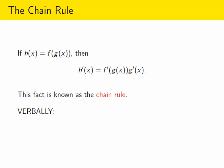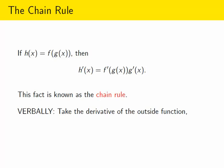So verbally, the way I would describe this rule is as follows. You take the derivative of the outside function. That's this f prime here. That was the derivative of f, which was our outside function. Take the derivative of the outside function and then plug in the inside function, the g. Just plug that into the f prime. After you've done that, multiply the result by the derivative of the inside function.